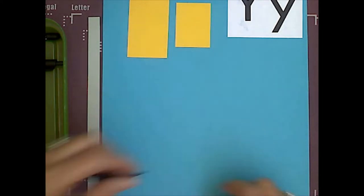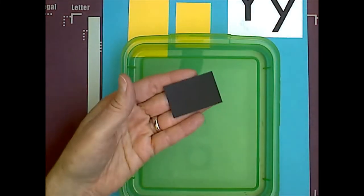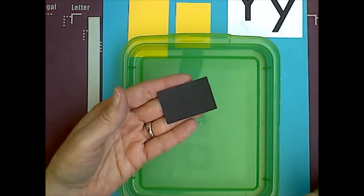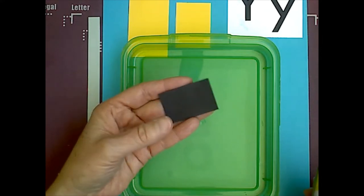So, the black rectangle, remember, insects have three body parts. This is the middle part of the insect, and it is the thorax.